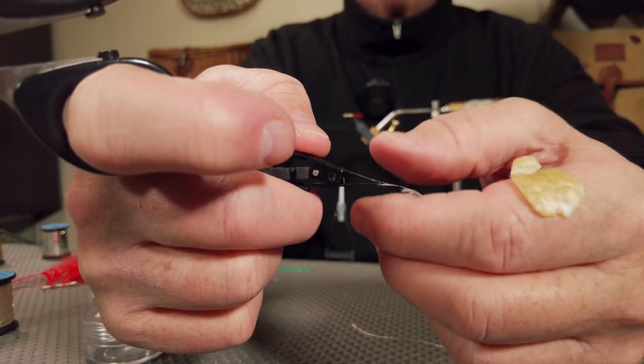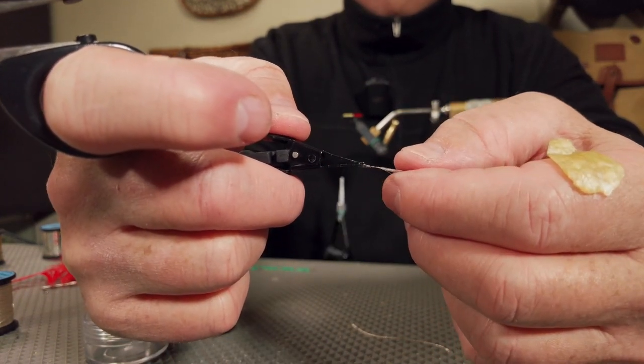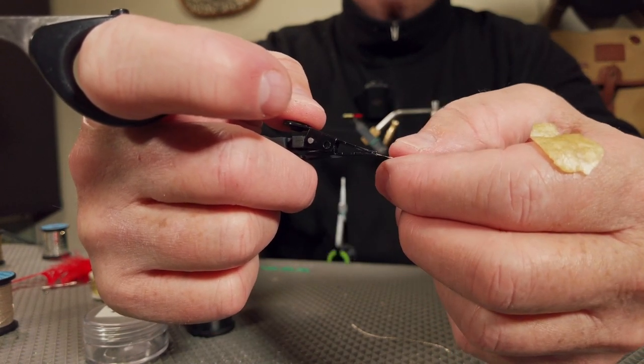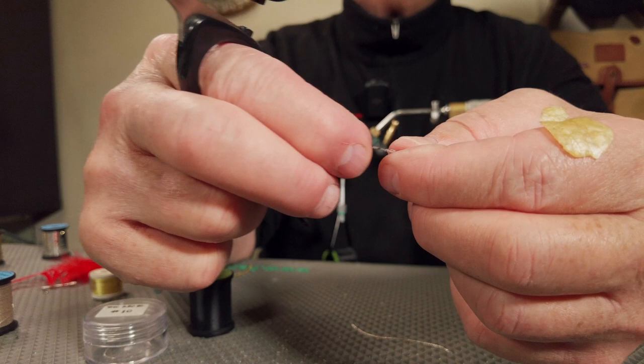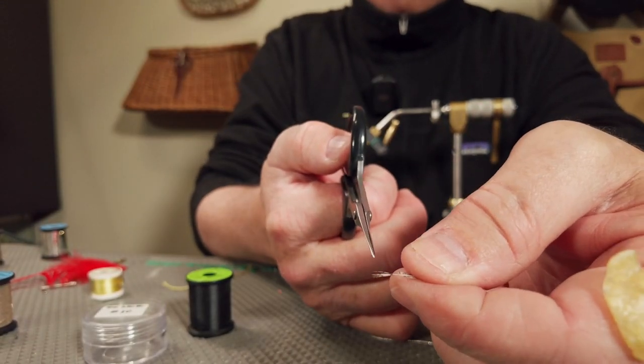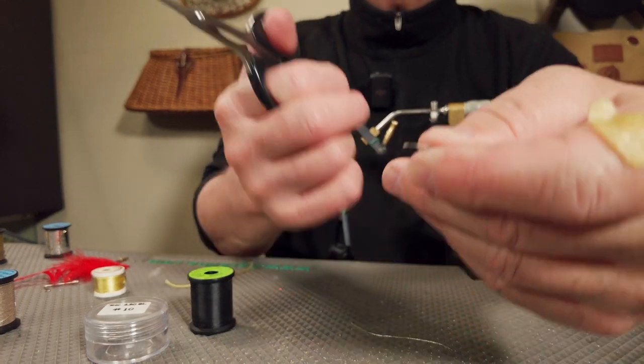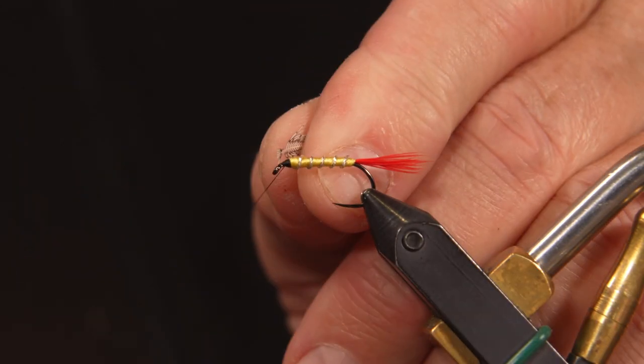I sweep the material back, looking for the right length of hackle that I want to tie in. But more importantly, right here at the tip, I'm going to trim that and create a little triangle there and that's my tie-in point for the hackle.